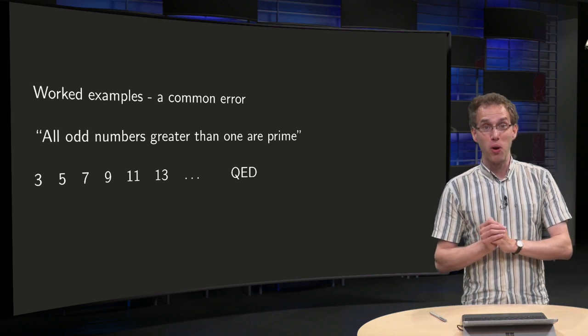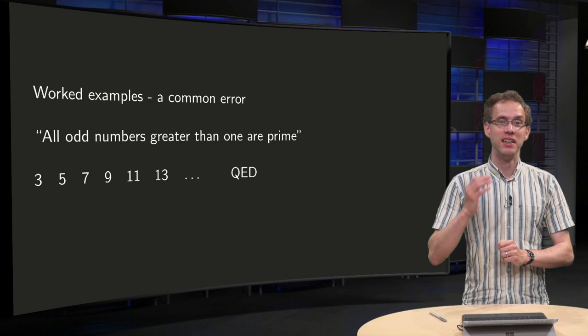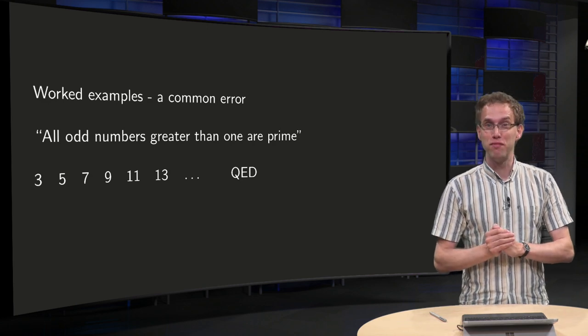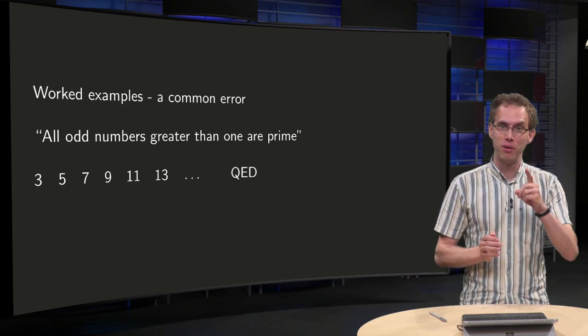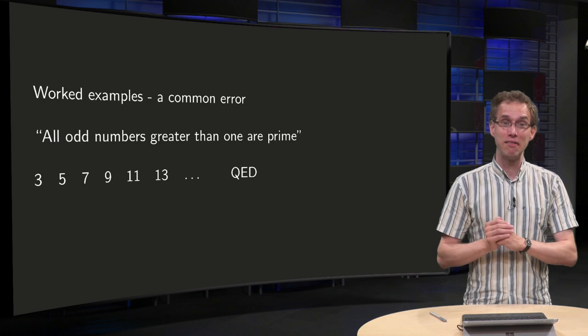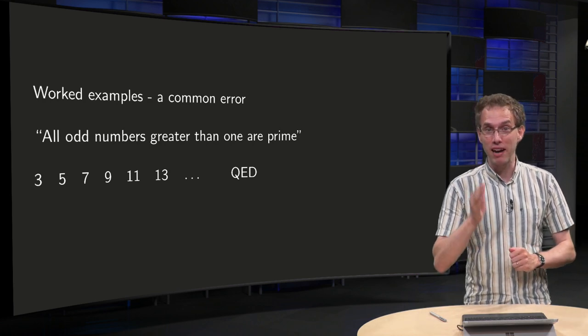According to physicists, all odd numbers are prime. Their proof is based on a very common type of error. Watch this video and never make this type of error, please.